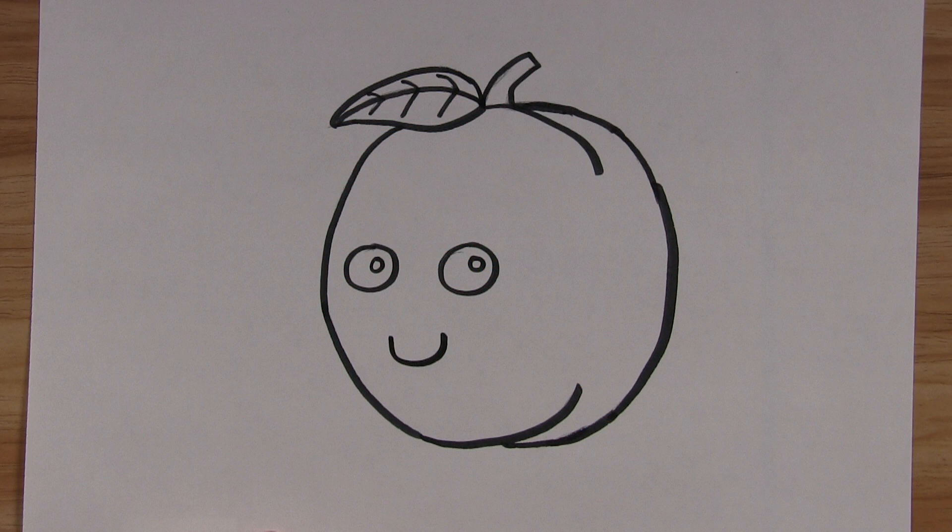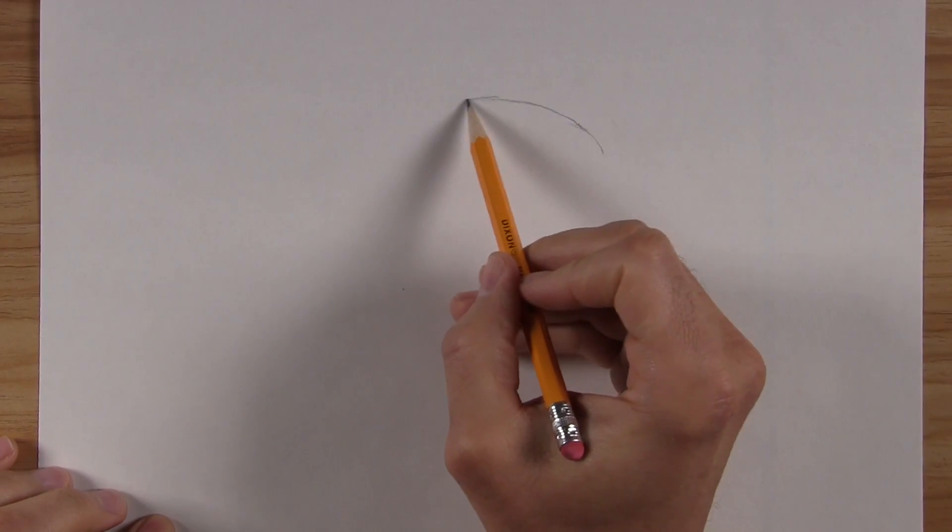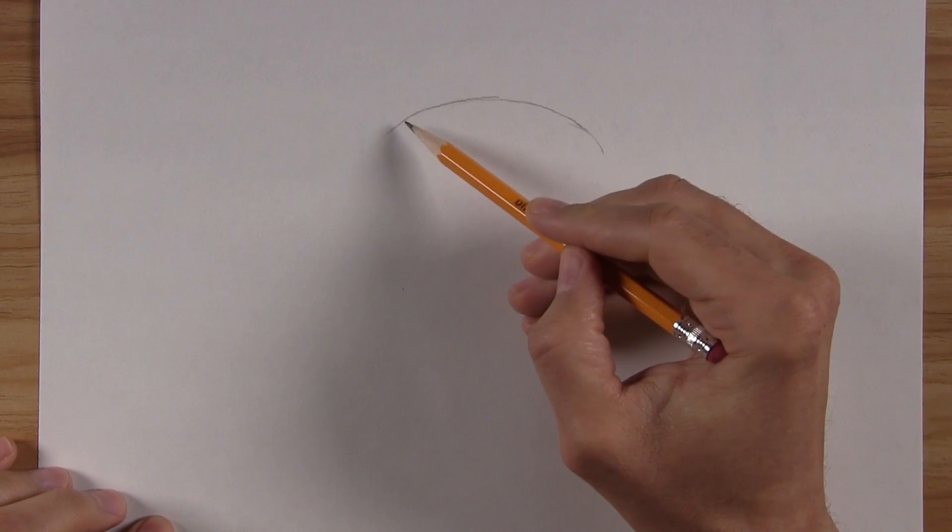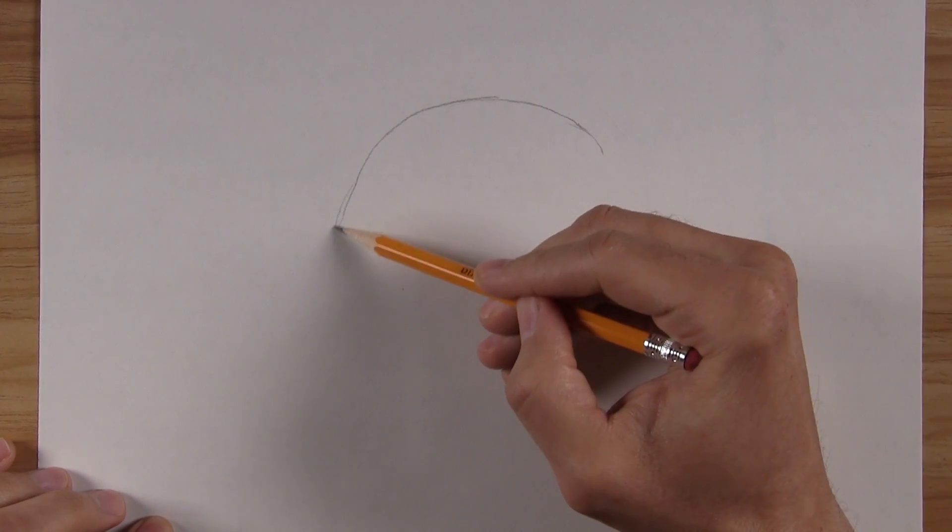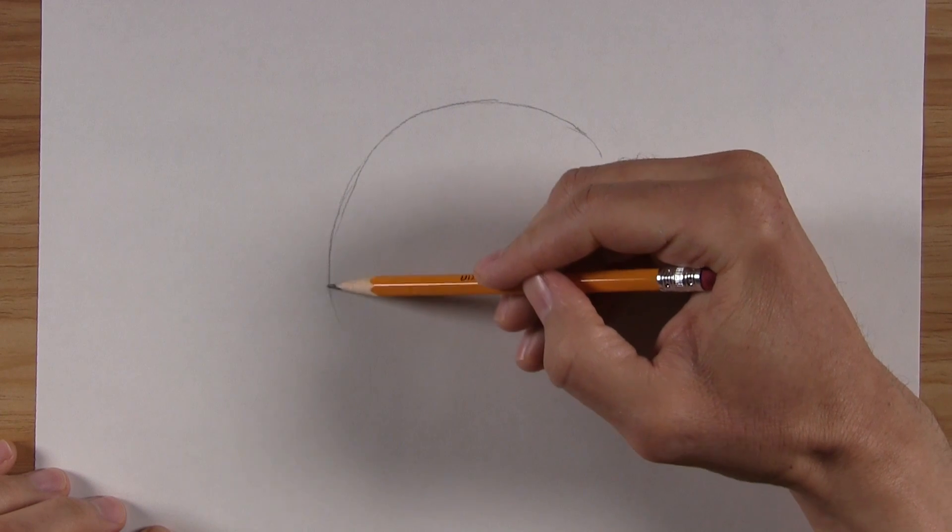Now let's get ready to draw one with our art teacher, Mr. Jack. Hello kids! Mr. Jack here. I hope you are ready to draw a cute peach today. It's super easy and I know you can do it. Here's how.